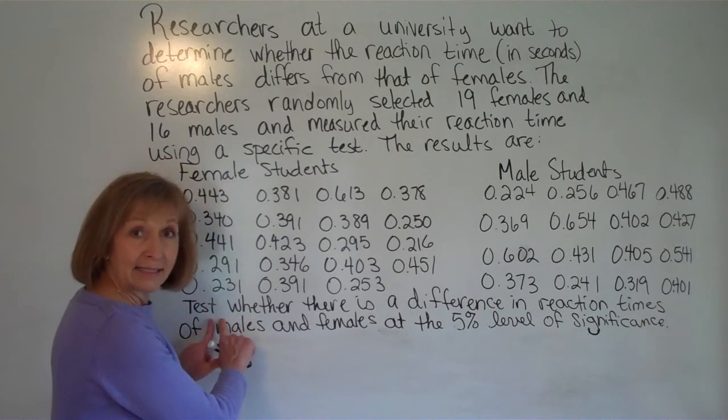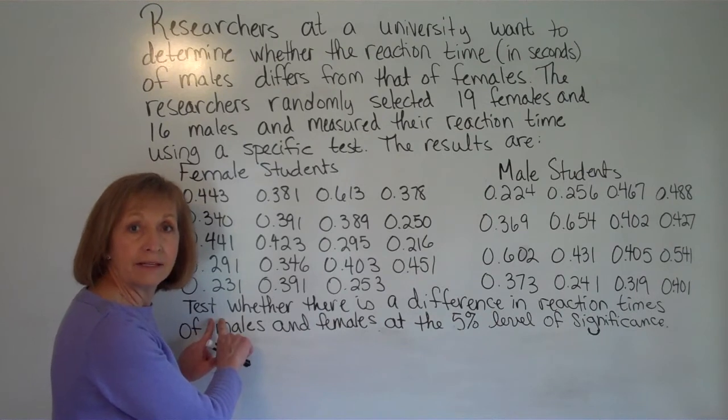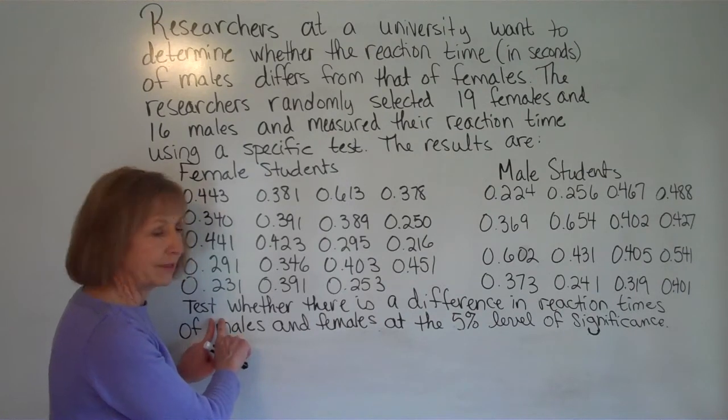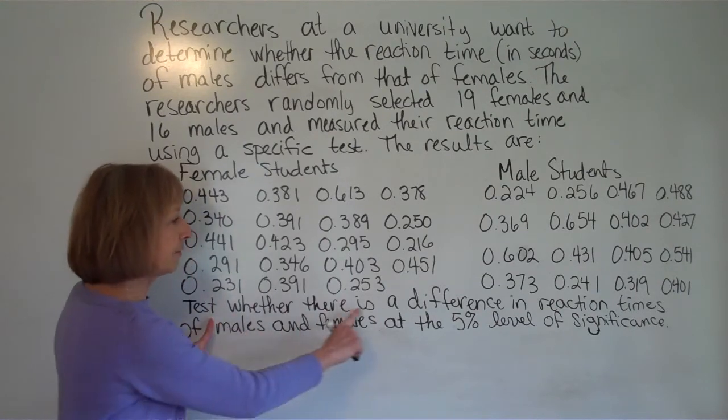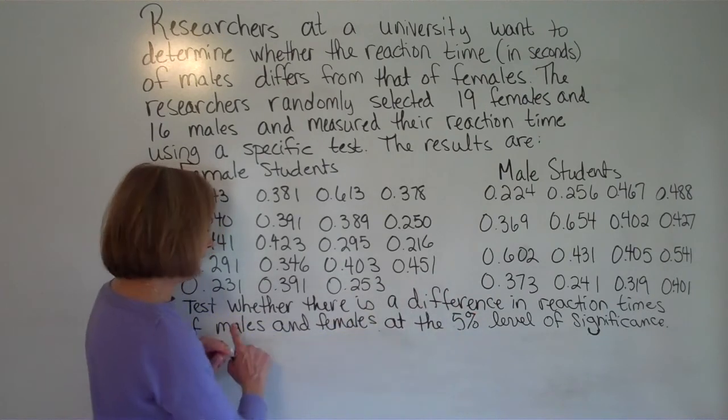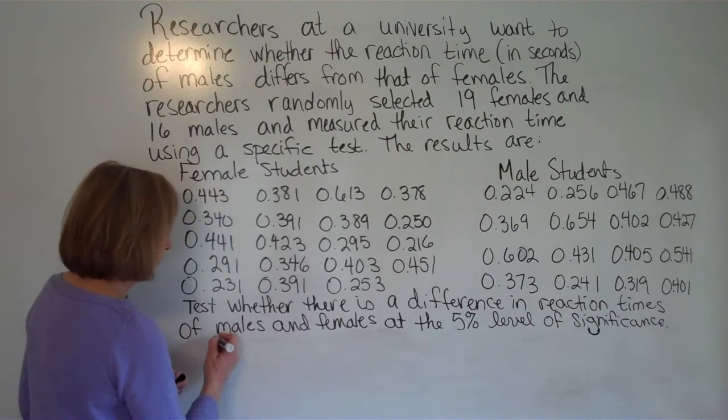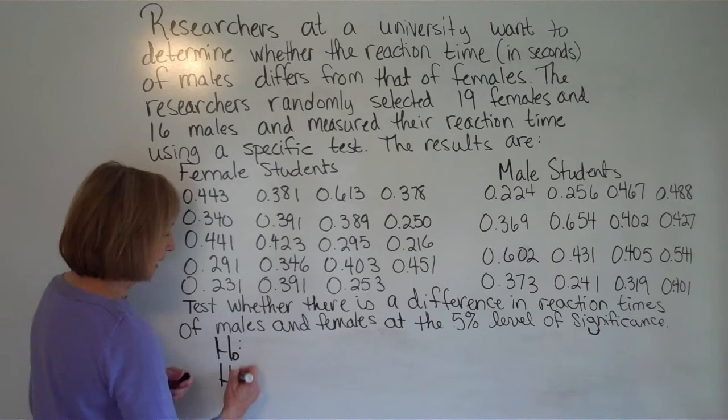Now we want to test, that's how I know it's a hypothesis test instead of being a confidence interval. So test whether there is a difference in reaction times of the males and the females at the 5% level of significance. So the first thing we need to do is state our null and our alternate hypothesis.